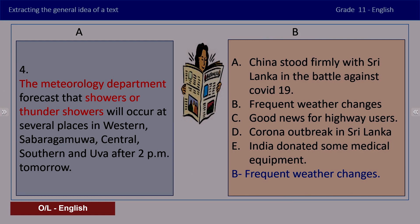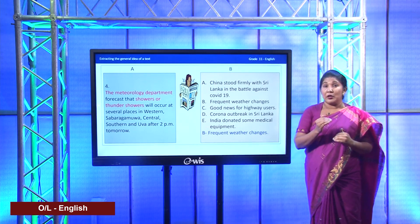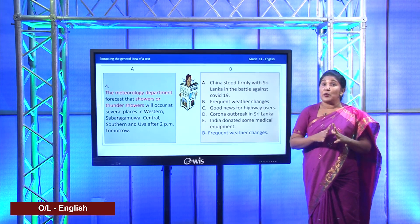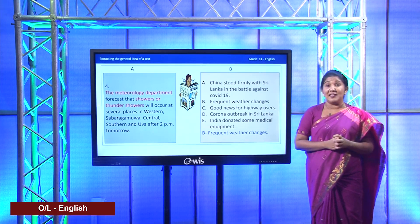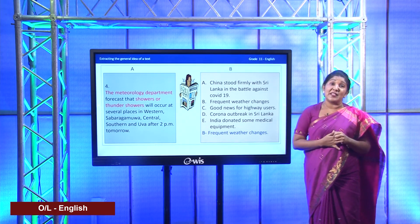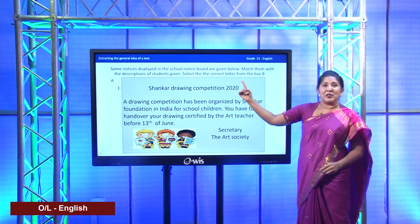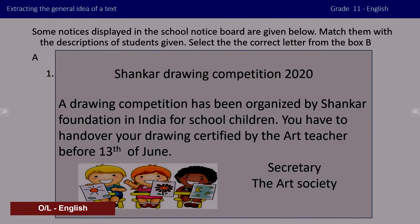You will do another activity to practice what you have learned. Remember, children: our focus today is to get a general idea of the given text, to give a topic, a headline, or to match what is given. These questions are frequent in your level papers and I know you will enjoy doing these activities. Let's move on. First, you should read the instructions, which is very important - sometimes they give you to write the number, sometimes they ask you to match. Instructions are very important and you have to read them very carefully.